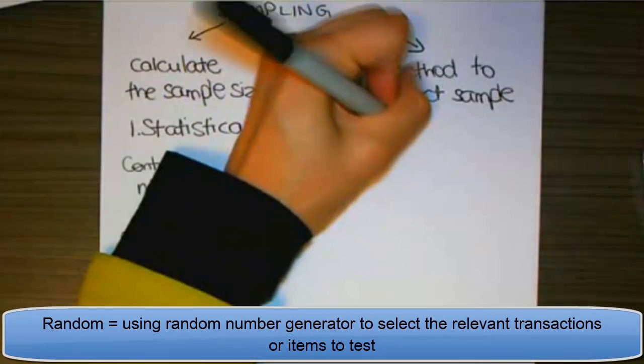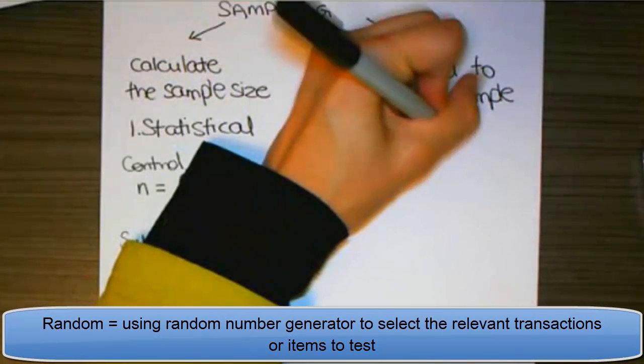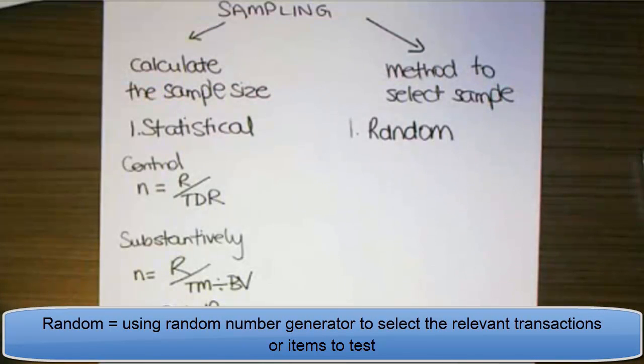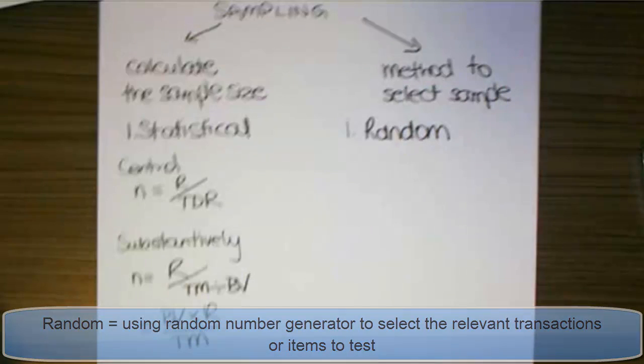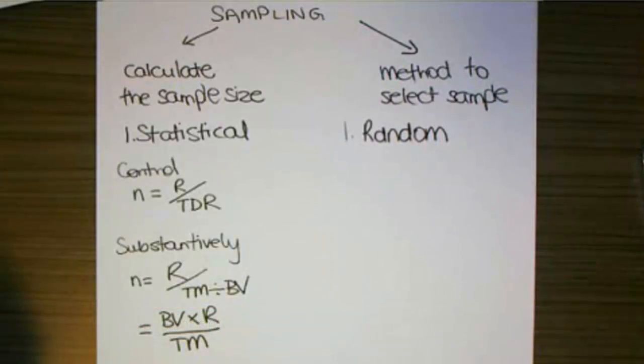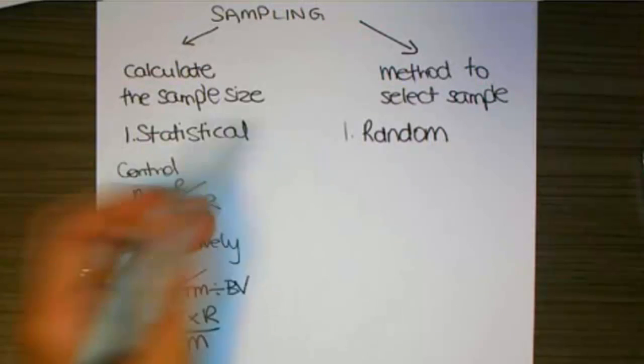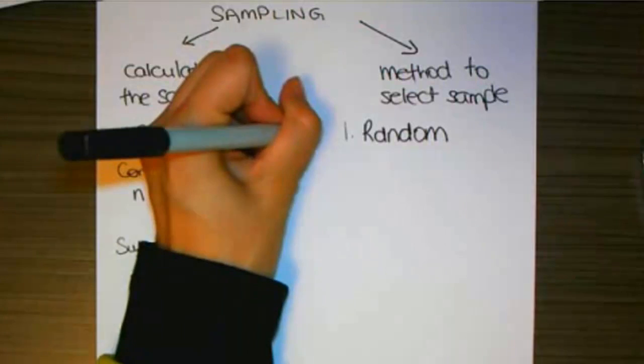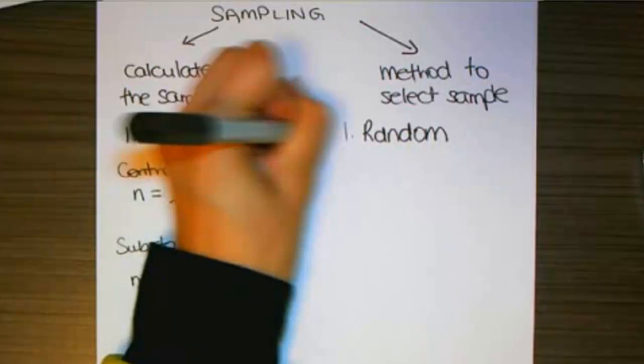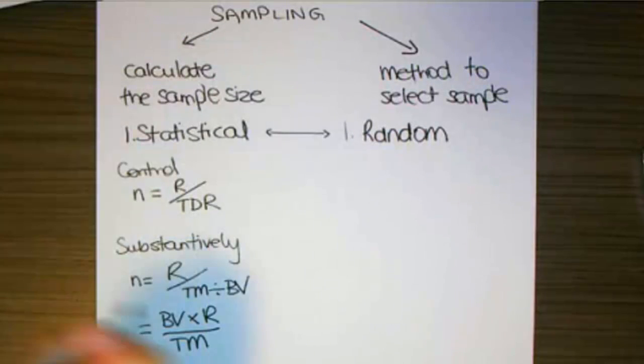The first one is random. We use a random number generator and rely on probability theory to allow a machine to randomly select our samples. If we're statistically sampling, then the best thing that we can do is also use random sampling to go along with that.